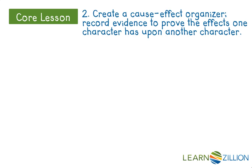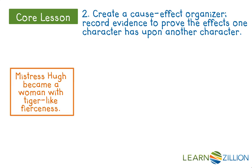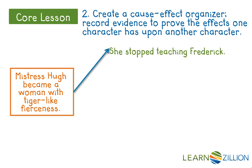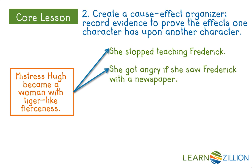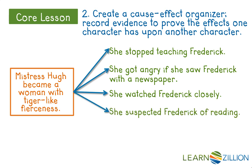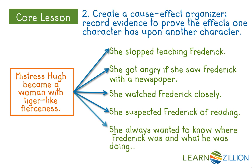Rereading the text and searching for the ways it is organized helps us make sense of it. We can now construct a cause-effect organizer. The cause: Mistress Hugh became a woman with tiger-like fierceness. Then we show all the things that happened to Frederick as a result — first, she stopped teaching Frederick; she also got angry if she saw Frederick with a newspaper; she watched Frederick closely all the time; she suspected Frederick of reading; and she always wanted to know where Frederick was and what he was doing.